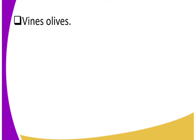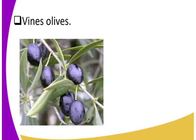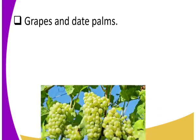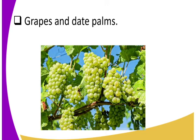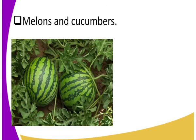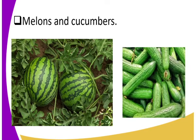We also had vines and olives. You might be surprised — what are vines and olives? There they are — olives and vines are among the indigenous crops of Mesopotamia. We also had grapes, which were very nutritious — the grapes from date palms were very nutritious. And we had melons and cucumbers, which many people are very fond of. Cucumbers and melons are nutritious and sweet.